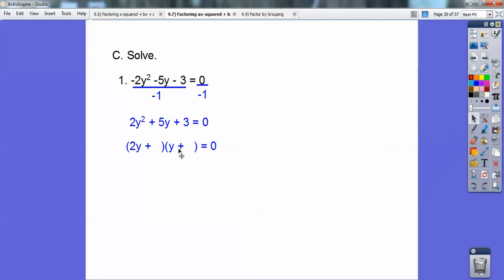So there's 2y times y. 3 is only 1 times 3, so I either got to put the 1 here and the 3 here, or the 3 here and the 1 here. Let's put the 3 here for a second. 3 times 2y for outer times outer is 6y. And then I'd add the 1 times y is 7y, so I want 5y, so the 3's got to go here. 3y, and then put the 1 here plus 2y. Yep, that's 5y.